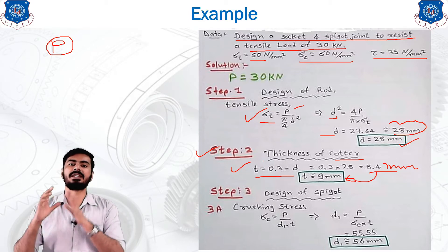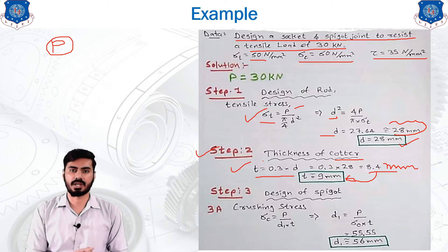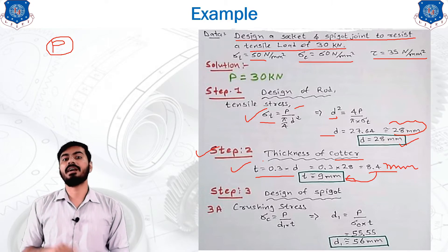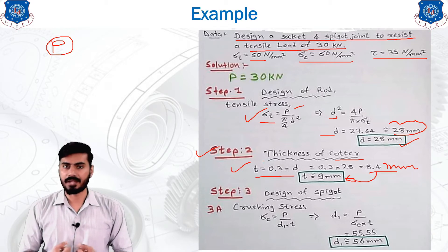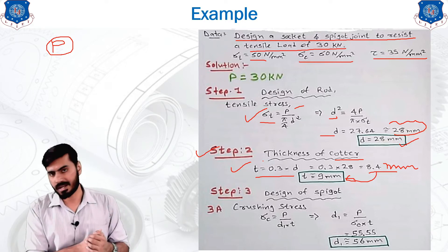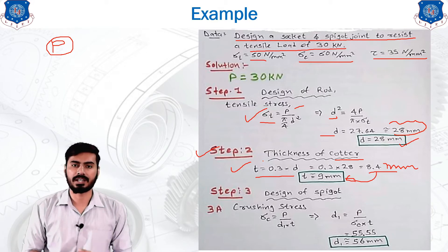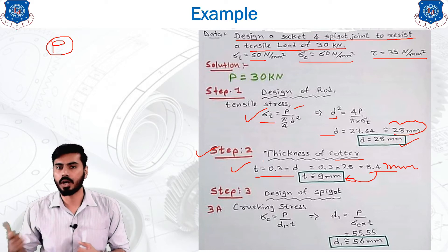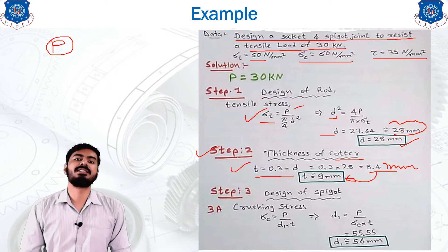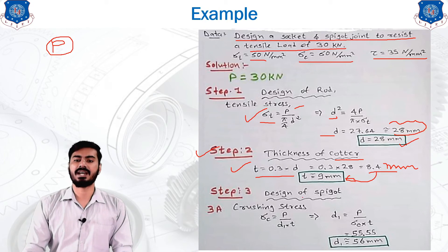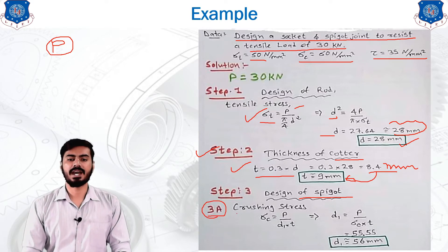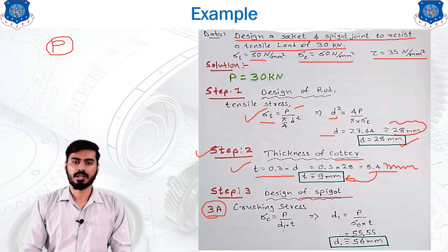We need to verify whether our component is safe during working conditions. To do this, we calculate the stress generated in the material and compare it with the given allowable stress. Step 3 is the design of the spigot. Step 3a uses the crushing stress equation to calculate one dimension using the previous assumption.